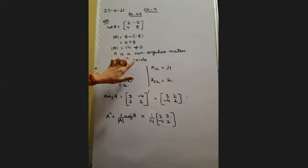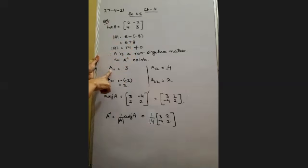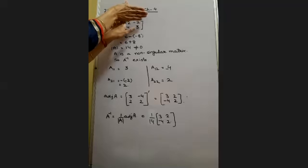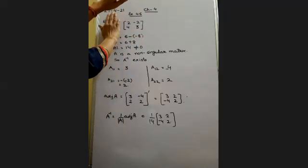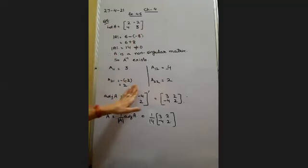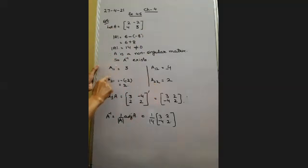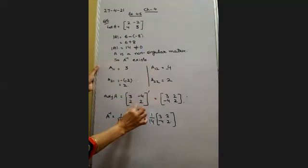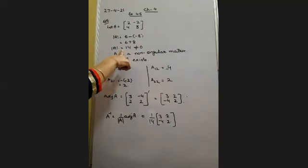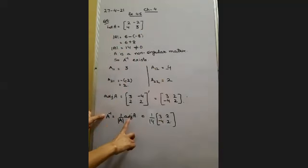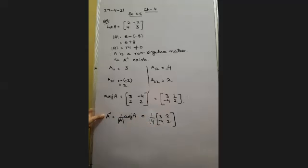So A inverse equals (1/14) × [3, 2; −4, 2]. This was question number 5. Question number 6 is exactly similar — you will do that yourself. Now I will move to question number 7, which is a 3×3 order matrix.